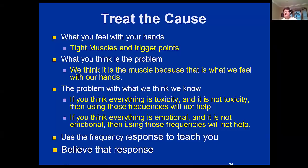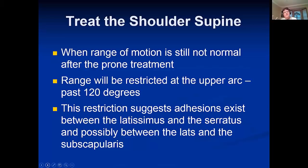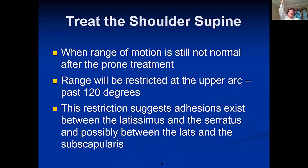When treating the shoulder supine: you treat the patient's neck and shoulder prone, then sit them up and look at their range of motion — it's still not quite normal. They can get to 160 or 170 degrees, but the very top of the arc past about 130 to 140 degrees slows down and the shoulder biomechanics become not smooth. This restriction suggests there are possible adhesions between the latissimus and the serratus, and between the lats and even the subscap up in the corner.